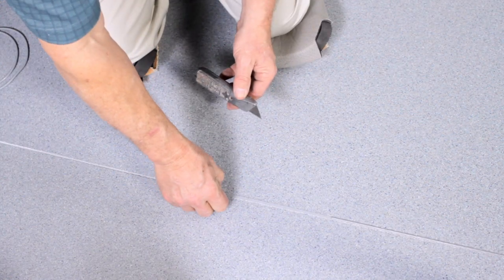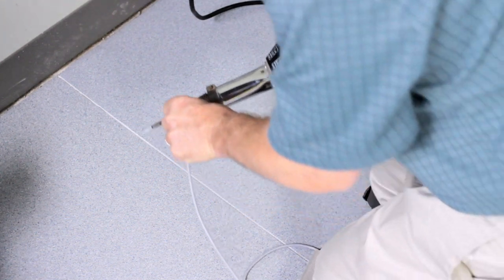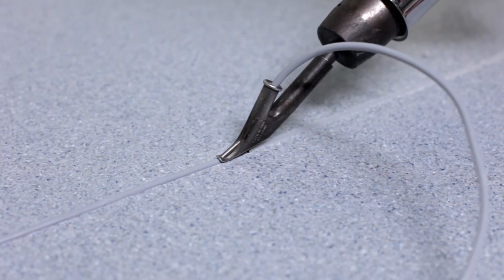Once the first length of rod is welded, skive and groove the last 1 or 2 inches of the rod to create a ramp. Cut a length of weld rod to complete the seam, starting at the opposite wall and extending up the ramp of the first weld.